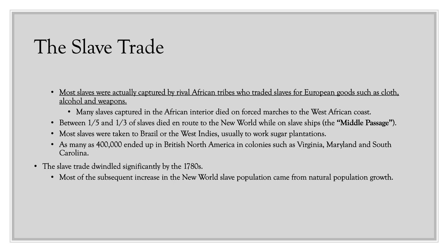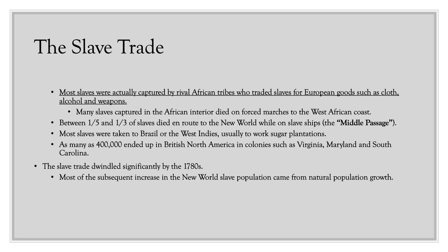The slave trade dwindled significantly by the 1780s, due to advocacy for abolition, France outlawing slavery as part of its revolution, and slavery developing a negative stigma. It doesn't become illegal yet, but abolition movements emerge in the late 18th and early 19th century. Even though the slave trade dwindled, there was still natural population growth of slaves in the New World into the 19th century.